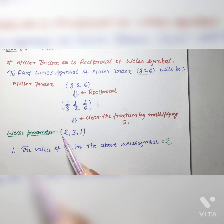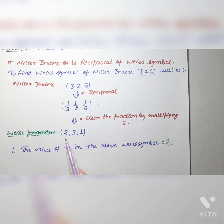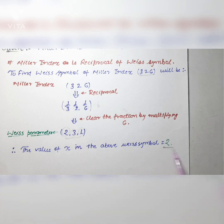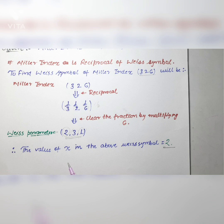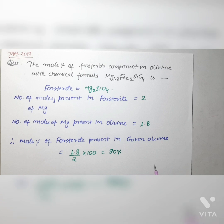So the Weiss parameter of the crystal phase whose Miller index is 3 2 6 is 2 3 1. The value of x in the Weiss symbol is 2, y is 3, and z is 1. Since the question asks only for the value of x in the corresponding Weiss parameter, the correct answer is 2.